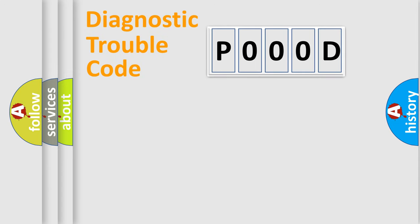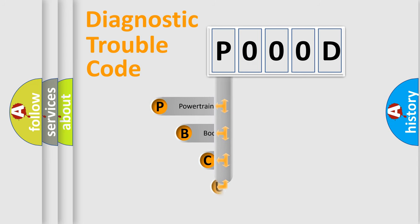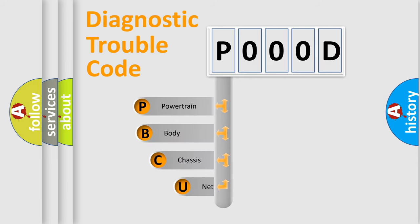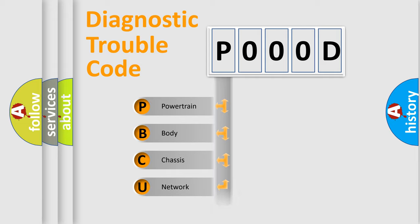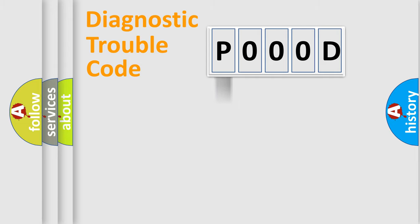Let's do this. First, let's look at the history of diagnostic fault code composition according to the OBD-2 protocol, which is unified for all automakers since 2000. We divide the electric system of the automobile into four basic units: Powertrain, Body, Chassis, and Network.